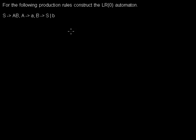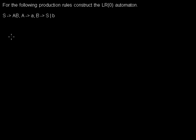When you do top-down parsing and you have, for example, those b, you have to do the same predictions every time. You have to predict those s, then predict from the s a b, and from the a you have to predict the a. Every time you have a b, you have to do all those steps again. That's why we can pre-compile those predictions and use an LR0 automaton, so we don't have to do, at the same situation, the same ten predictions, but just only one.